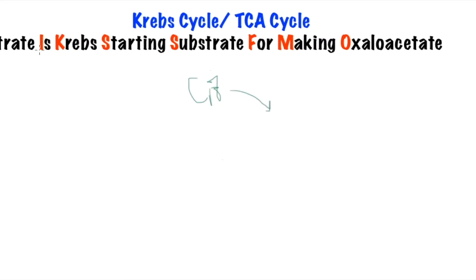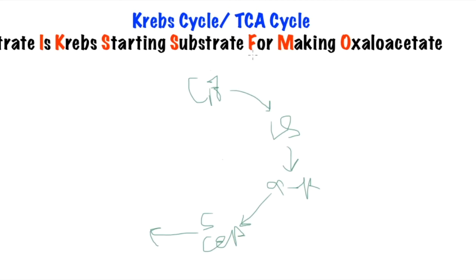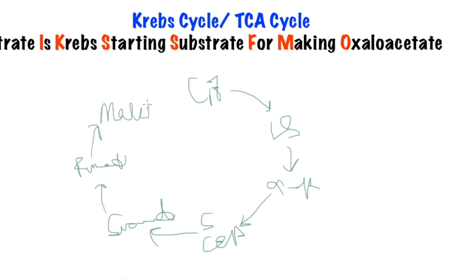I stands for isocitrate. K stands for alpha-ketoglutarate. S for succinyl-CoA. Then we have succinate, then F for fumarate, M for malate, and O for oxaloacetate.